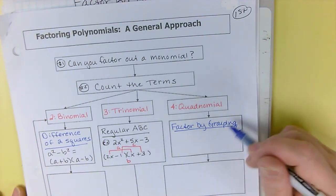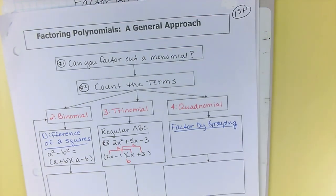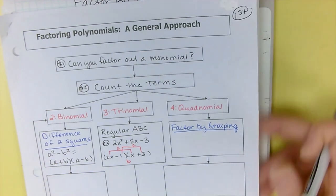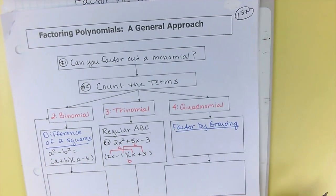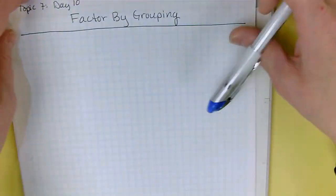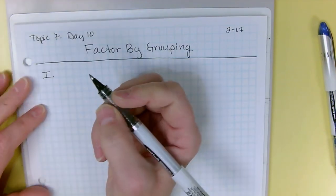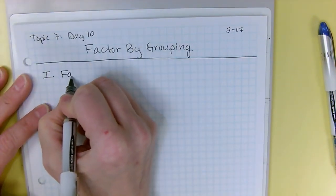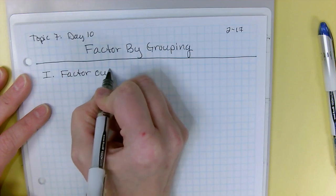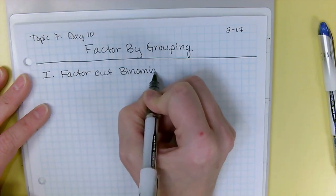So we're going to fill in an example after we do the notes, after we've learned this. But it's our third situation here. Okay, so factor by grouping. Row number one, factor out binomial pairs.